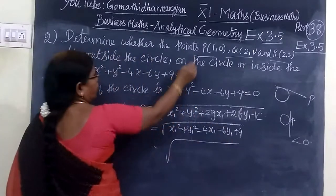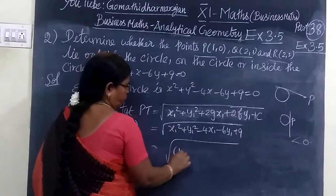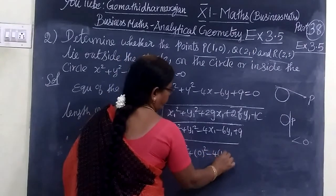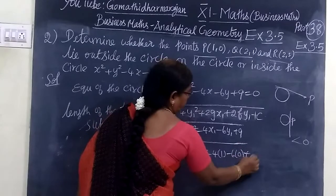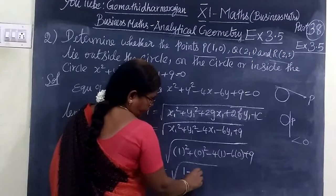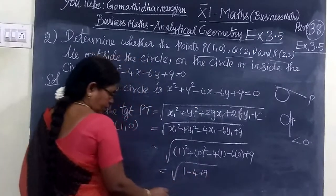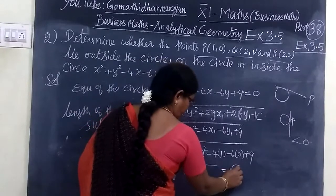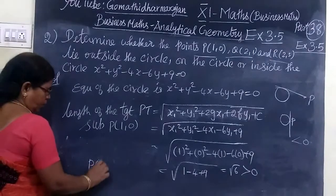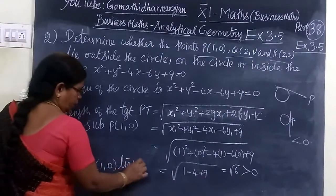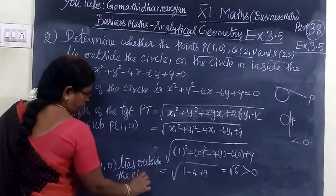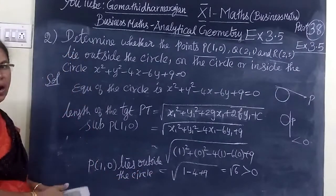This is equal to x1 is 1, so 1 square, then 0, then minus 4 times 1 minus 6 times 0 and 9. So this is 1 minus 4 plus 9. This equals root of 6. This is greater than 0. Therefore, P(1,0) lies outside the circle.